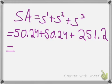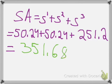Lastly, what you want to do is add all the sides up, so side one plus side two plus side three. I put all my numbers, and now I'm going to add it up. The total sum would be 351.68 centimeters squared.